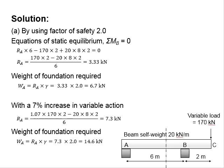First, we adopt the factor of safety equals to 2.0 of the working load. You use the equations of static equilibrium, where sigma Mb equals to 0, to find the reaction at Ra. The reaction is found to be 3.33 kN.